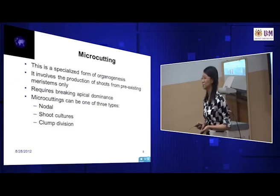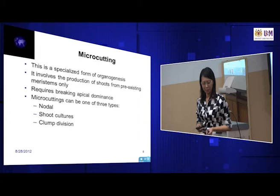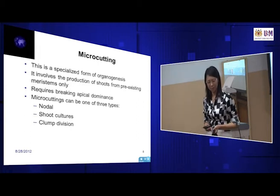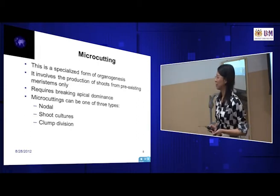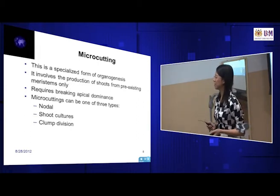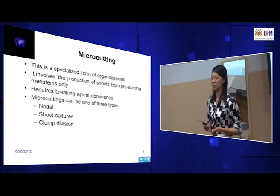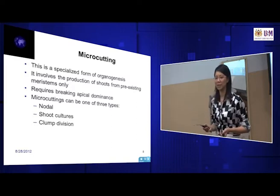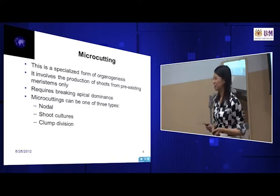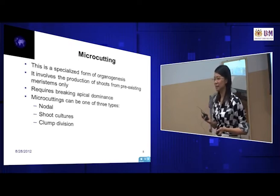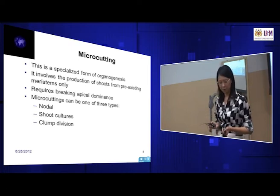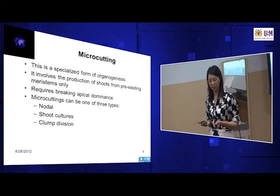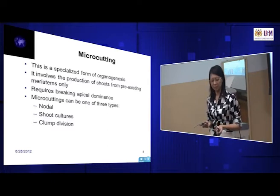So actually, plant tissue culture is a huge business. That's organogenesis. Now microcutting — what we've seen in the video was a sort of microcutting, micropropagation. They're actually cutting the plant into smaller sizes and then growing again. Microcutting can be one of three types: nodal, shoot cultures, or clump divisions.